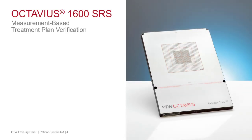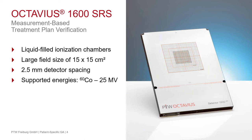One of our solutions for measurement-based treatment plan verification is the Octavius Detector 1600 SRS. This is only one example for the variety of ionization chamber detectors from PTW. It is a liquid-filled ionization chamber detector with a large field size of 15 × 15 cm². The detector spacing in the center area is 2.5 mm and you have a wide range of supported energies, from cobalt-60 up to 25 MV.